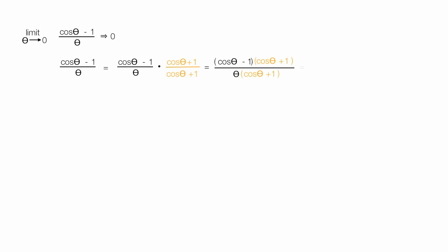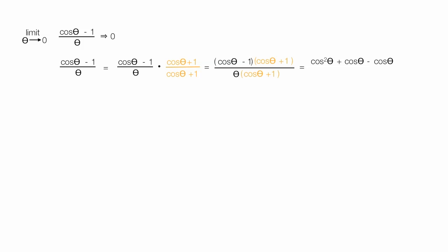This is equal to cosine theta minus one times cosine theta plus one, divided by theta times cosine theta plus one. Expanding the numerator: cosine theta times cosine theta gives cosine squared theta, cosine theta times one gives cosine theta, negative one times cosine theta gives negative cosine theta, and negative one times one gives negative one. Positive cosine theta and negative cosine theta cancel out, leaving cosine squared theta minus one divided by theta times cosine theta plus one.